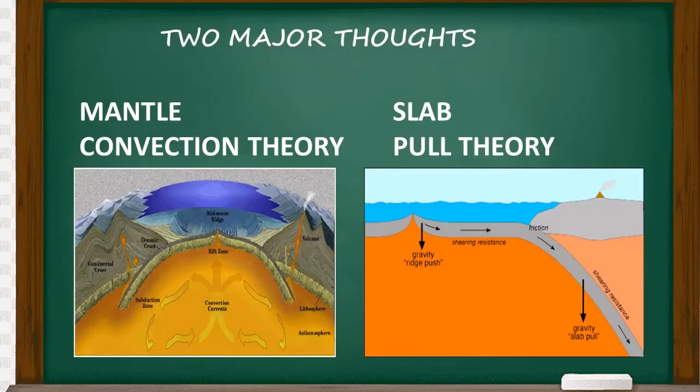These thoughts are heat loss and gravity, which can be explained using the mantle convection theory and slab pull theory, respectively. Let us discuss first mantle convection theory.